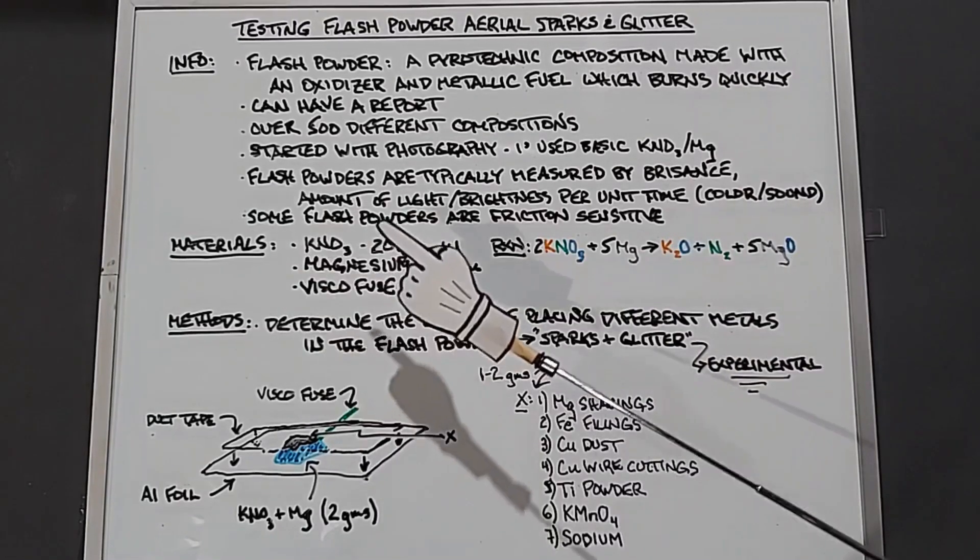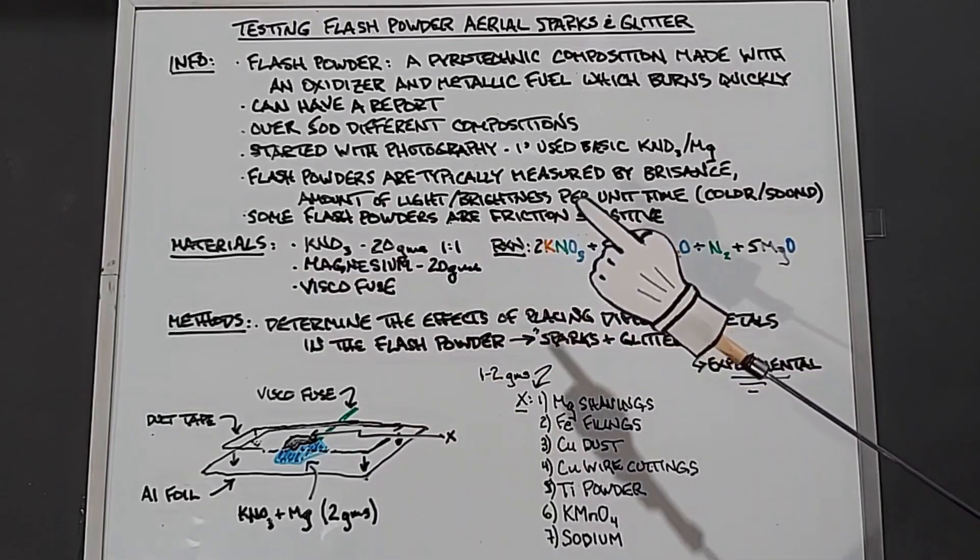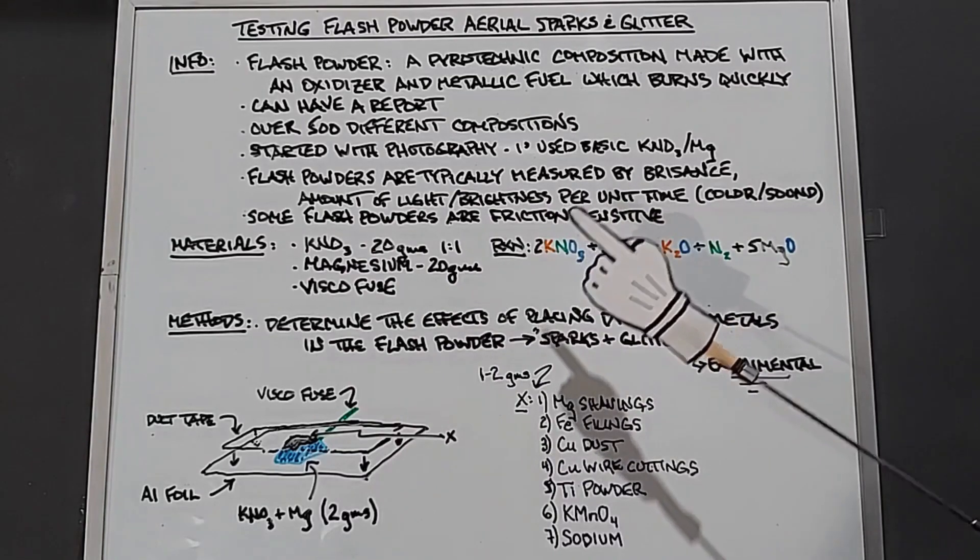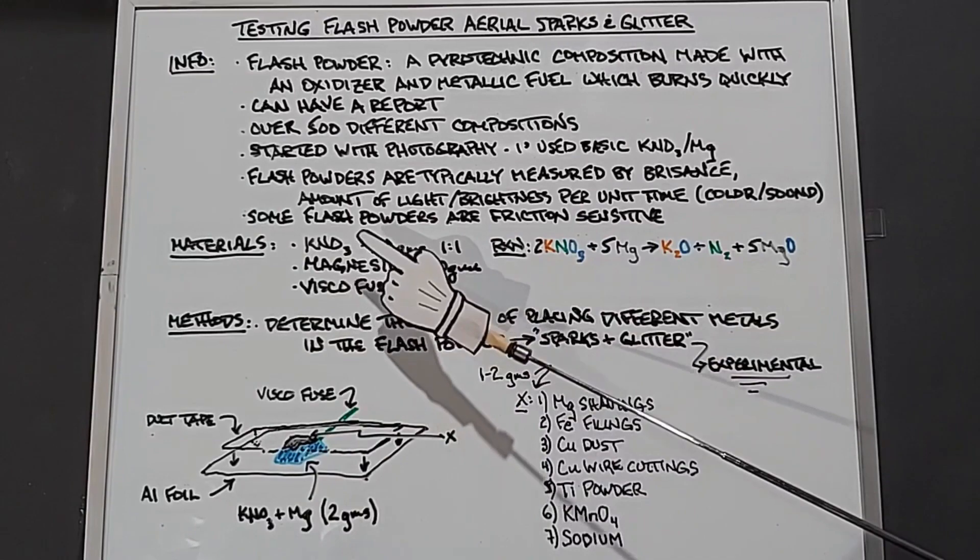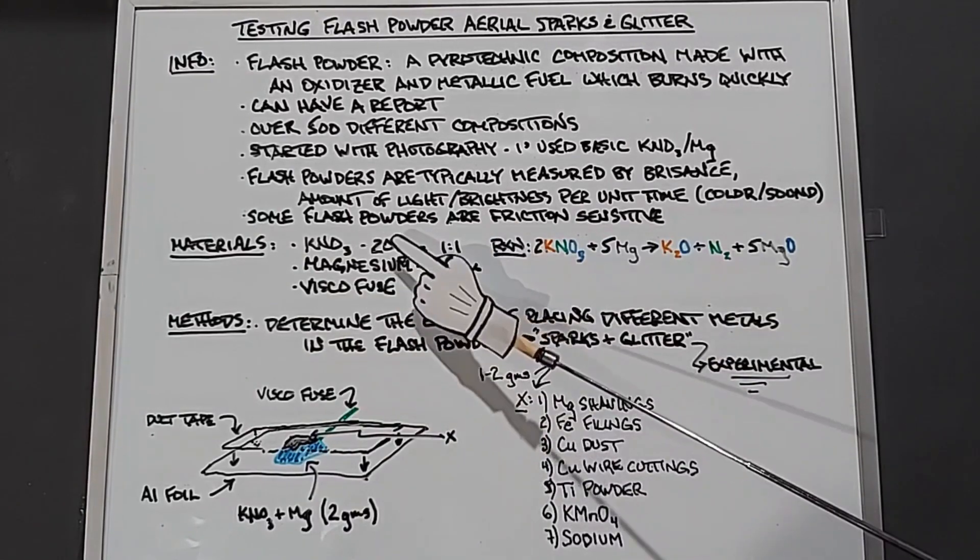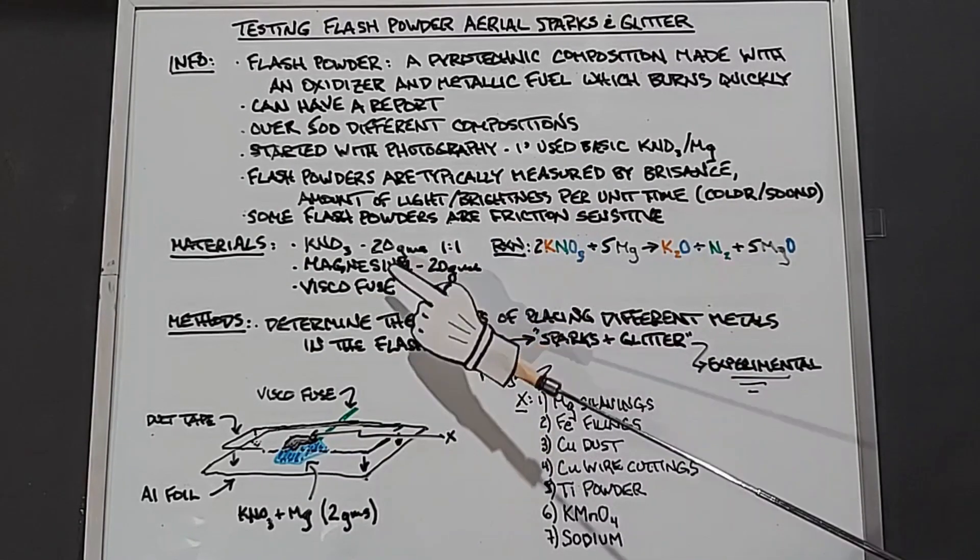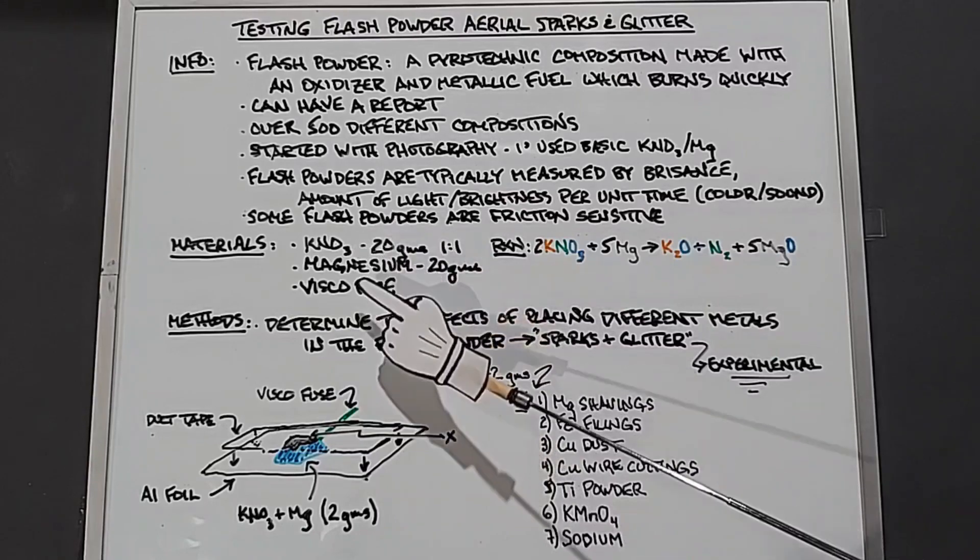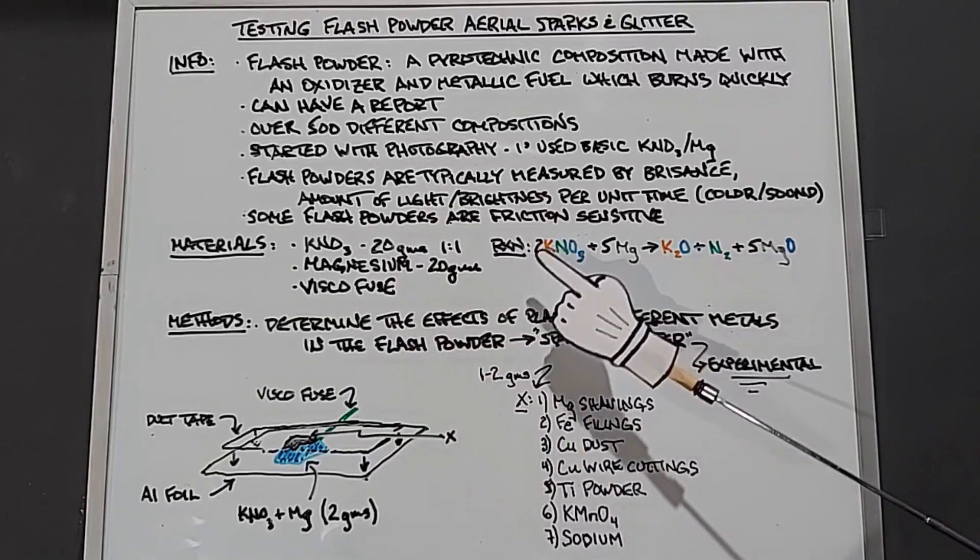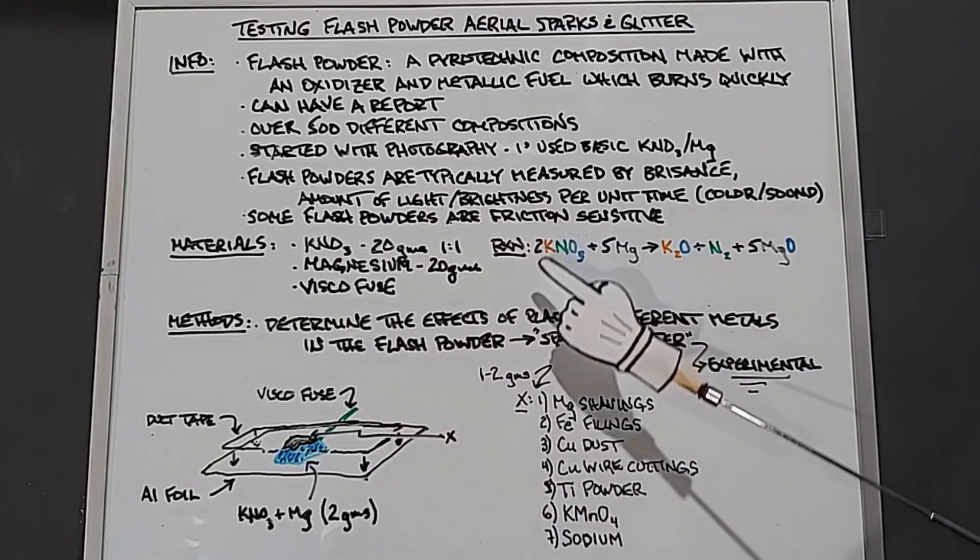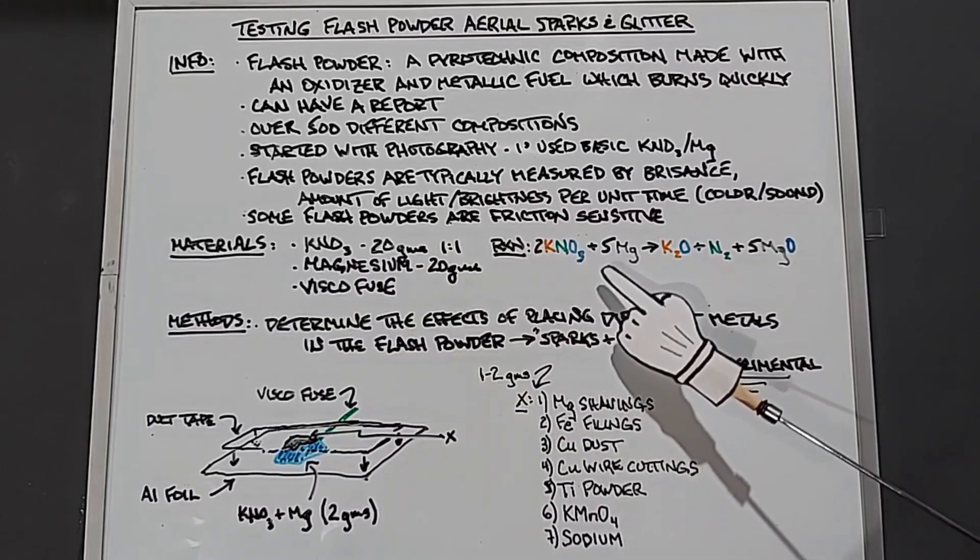Some flash powders are truly friction sensitive, and obviously when using these you need to be extremely careful. As I mentioned earlier, in our materials we're going to be using potassium nitrate and magnesium, so I'm going to use a one-to-one ratio, 20 grams of each one. We're also going to need some visco fuse to light this stuff.